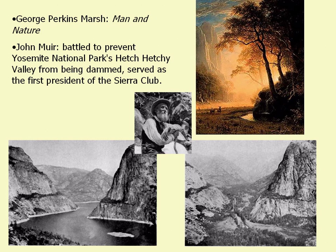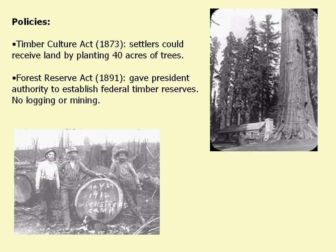A shift in land-use and forest policy took place as government recognized the need to manage resources to secure future supplies for a growing economy, shifting from exploitation into a more conservationist viewpoint. The Timber Culture Act of 1873 allowed settlers to take land, but they had to plant 40 acres of trees to get a deed to it. The Forest Reserve Act of 1891 gave the U.S. president the authority to establish federal timber reserves — which later became the U.S. National Forests — and prohibited logging or mining on those tracts of land.